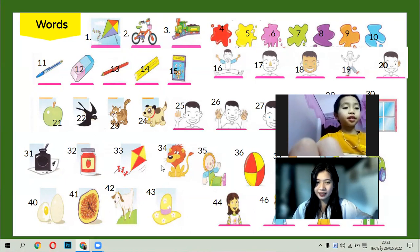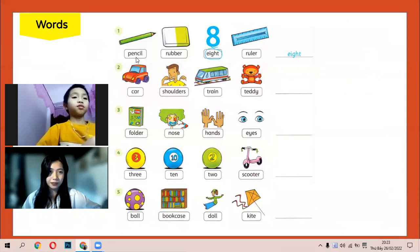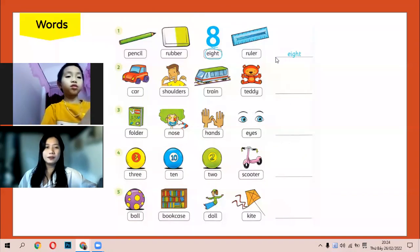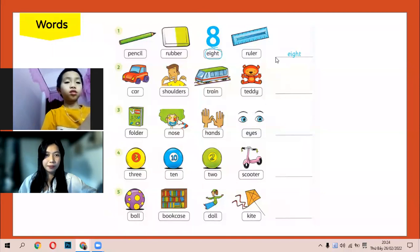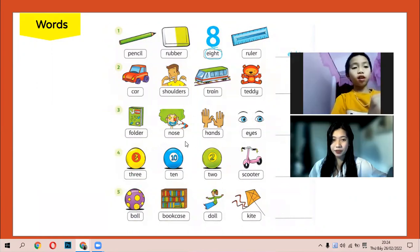What's this, Ken? Hat. It's a hat. Okay, what about this? It's a lion. Lion, lion. Now, Ken, tell me the odd one out. Okay, for example, we have pencil, rubber, eight, and ruler. The odd one out is eight because pencil, rubber, and ruler are school things. Okay, number two: car, shoulders, train, and teddy. The odd one out is? Okay, sorry Ken, number two, the answer is shoulders. Shoulders.